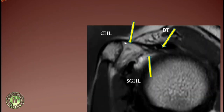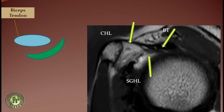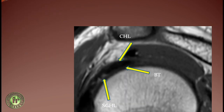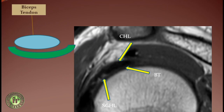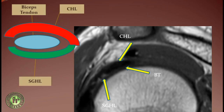At the T-junction, the CHL is seen covering the biceps tendon and the SGHL has started coming under the undersurface of the biceps tendon. Further distally, the biceps tendon is completely surrounded by CHL above and the SGHL below. The biceps tendon is in the center, with the SGHL underneath and the CHL above.